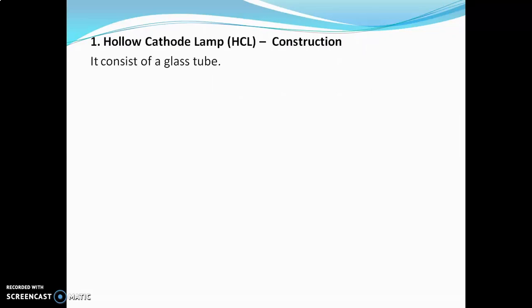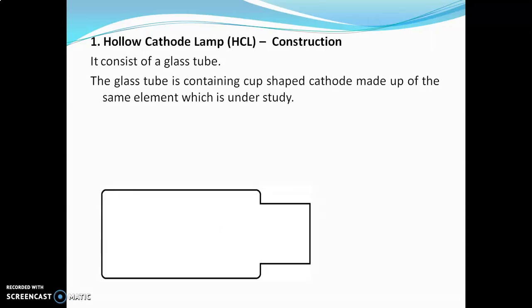The hollow cathode lamp consists of a glass tube containing a cup-shaped cathode made up of the same element which is under study. For example, this is a sodium hollow cathode lamp — it contains a cathode of sodium. If we want to study sodium from the sample, the cathode is made up of sodium; if we want to study magnesium, the cathode is made up of magnesium. The sodium cathode lamp will emit specific or characteristic radiations of sodium only, while the magnesium cathode lamp will emit characteristic radiations of magnesium.